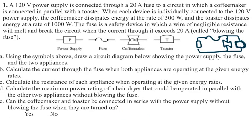For Part B, calculate the current through the fuse when both appliances are operating at the given energy rates. The power supply is 120 volts. The coffee maker dissipates 300 watts and the toaster dissipates 1000 watts.